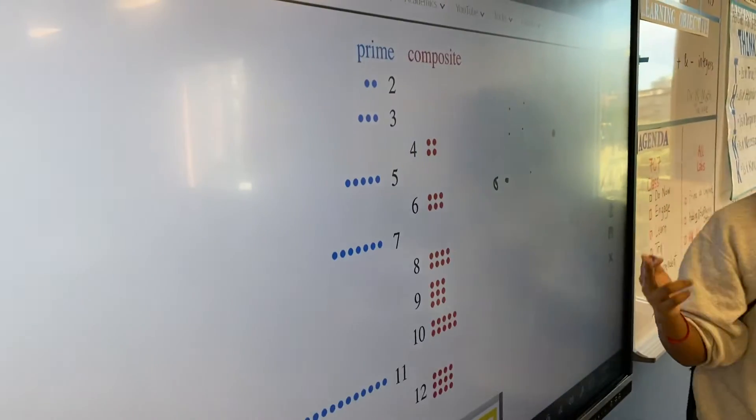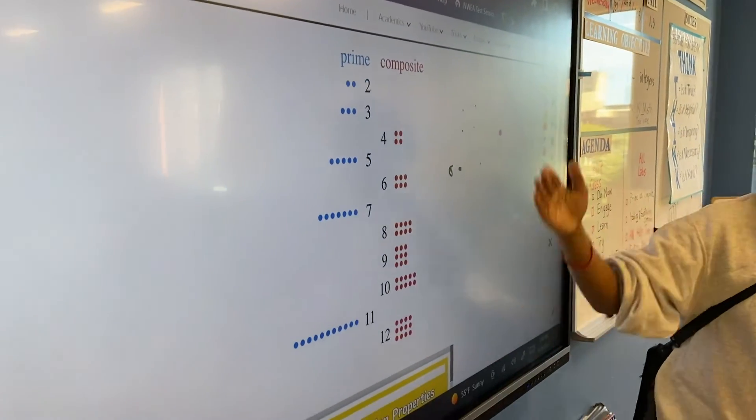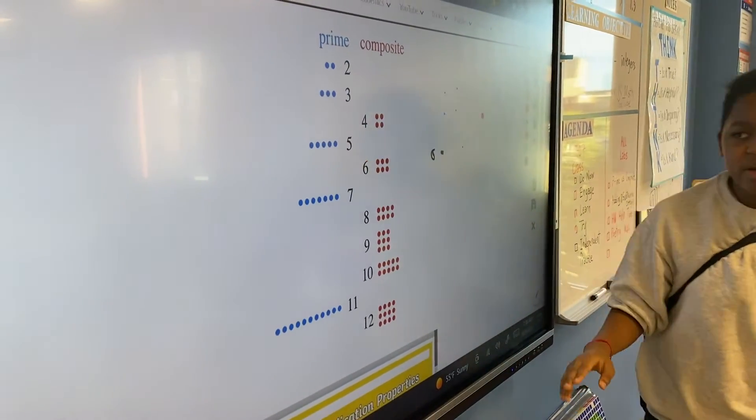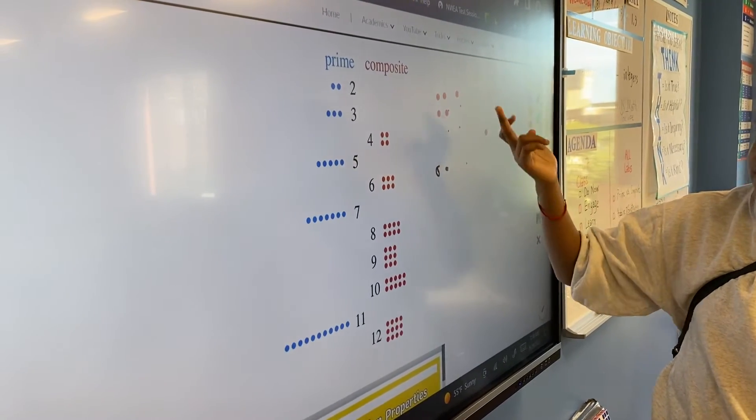But if it's a prime number, prime numbers, no matter if it's any prime number, it can never be put in the square easily. Because it was like five: one, two, three, four, five, and that's obviously not a full square.